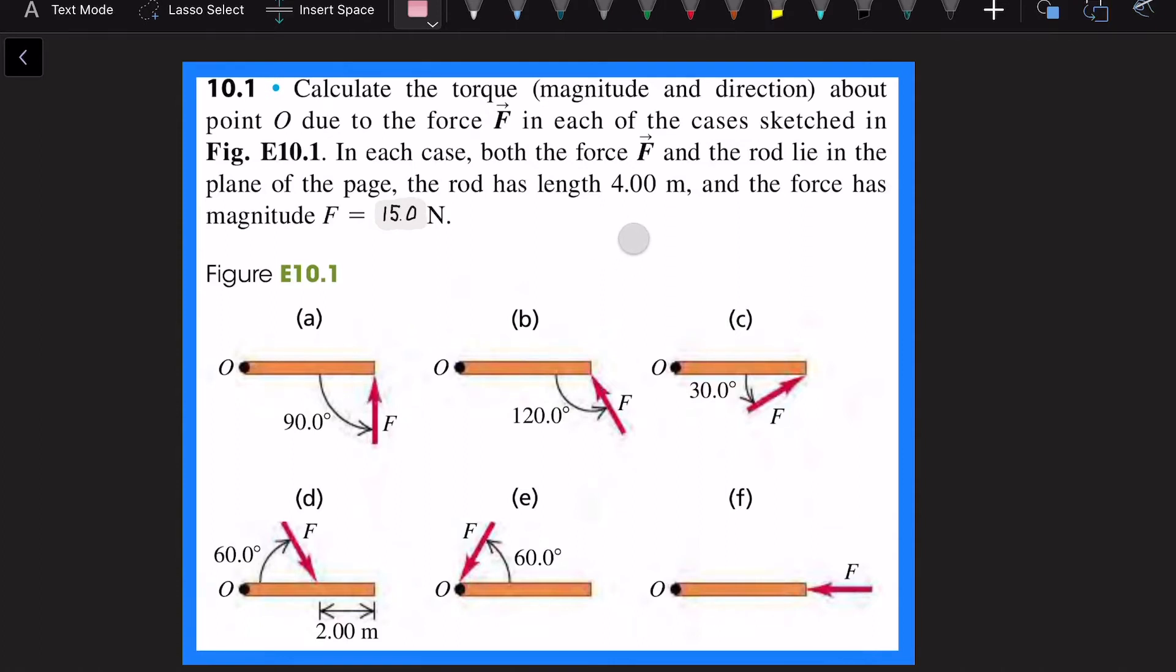Hello, one more time. Now we're going to consider this problem, this is 10.1. The information that we have is a radius of 4 meters and the force is 15 Newtons. The formula that we're going to use is this one right here, which is torque equals radius times the force times sine of theta.